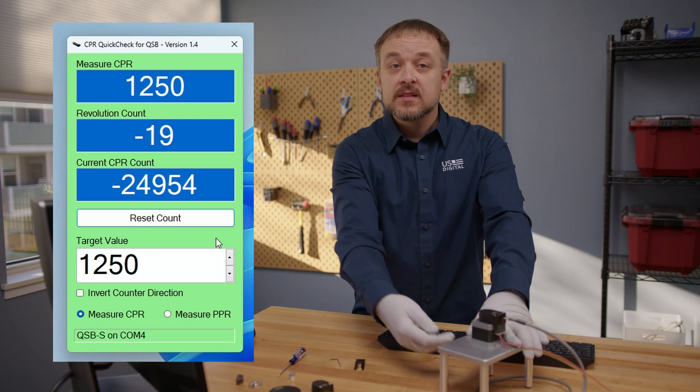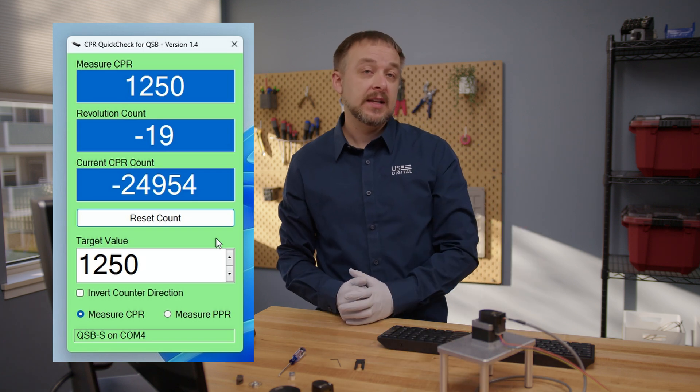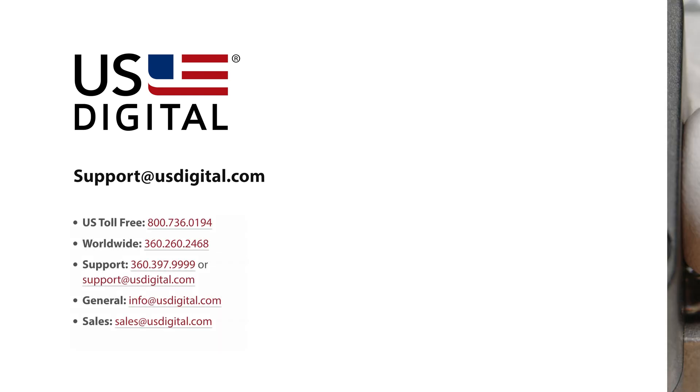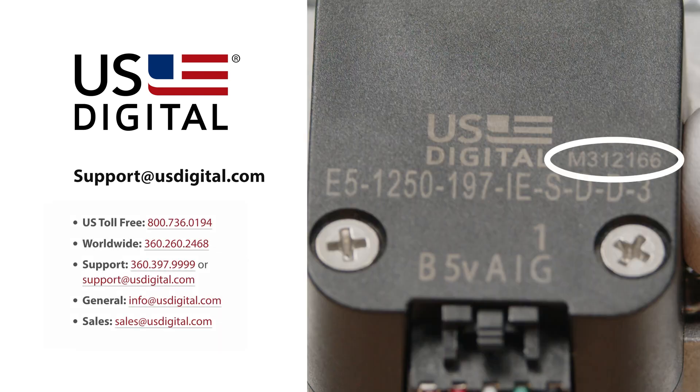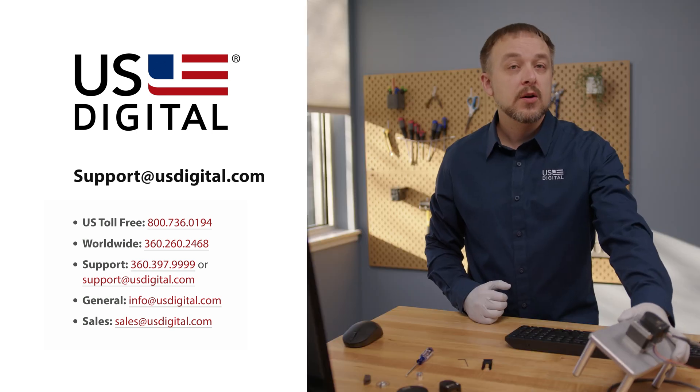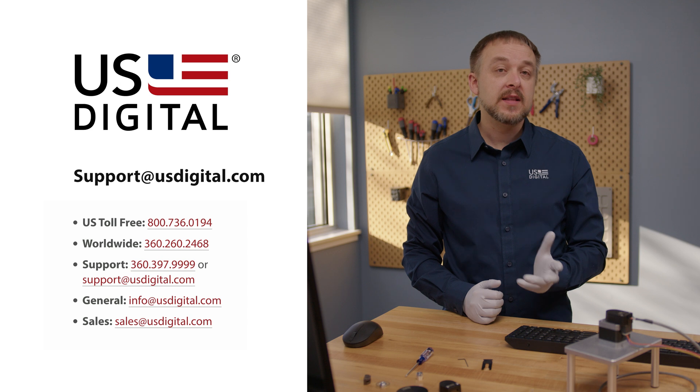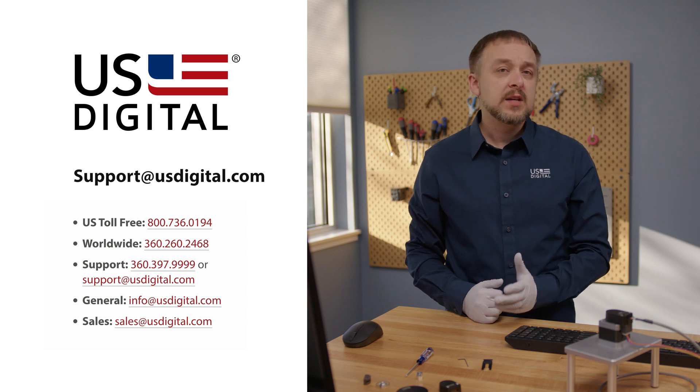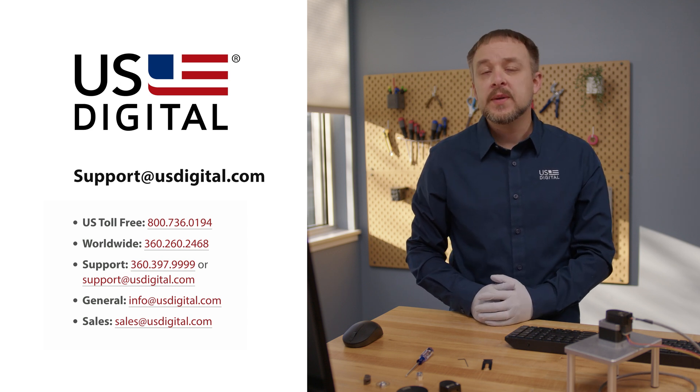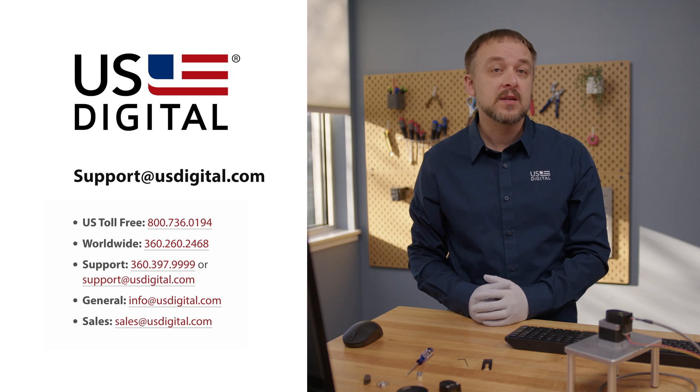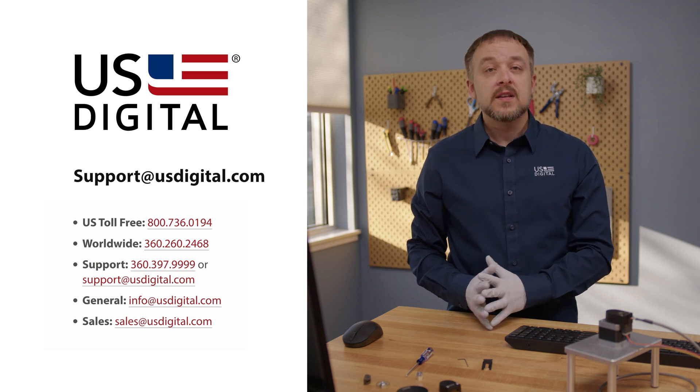If you've checked all of these things and are still having issues, you're going to want to let us know. Start by reaching out to support at usdigital.com. Be sure to include the lot number listed on the encoder cover. It begins with an M. And let us know that you've seen this video and checked through all these steps so that we can expedite the RMA process. Everything we mentioned in this video are things that we'd be asking you to check before initializing the process. So let us know you've already done this. We'll just make things that much faster.